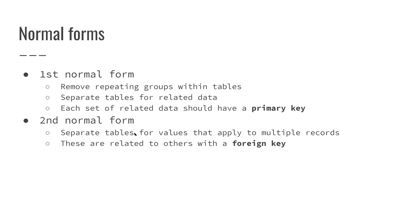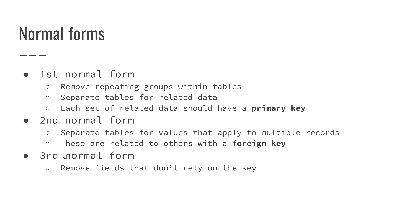The second normal form is that you should have separate tables for values that apply to multiple records. For example, a customer address — a mailing address — could apply to multiple records, so that address might appear in multiple transactions. Rather than having it repeated every single time, you should break it out into its own table where you just have the address in one place and then a foreign key that connects over to it. Third, remove fields that don't rely on the key — to remove extra information and have it in its own table where needed, or it might not be needed at all.